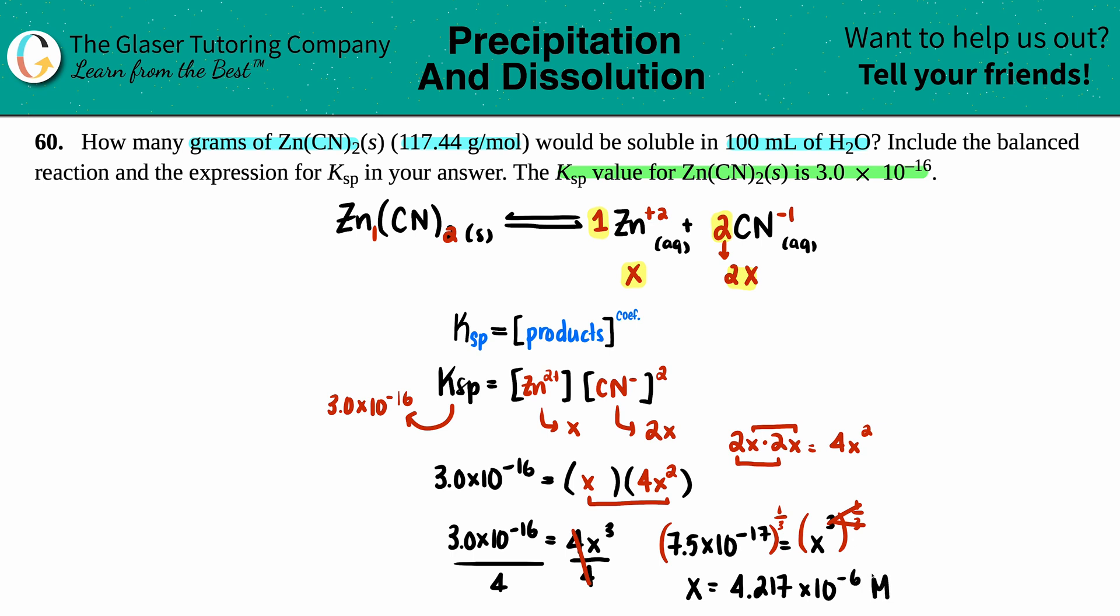The question asks for grams of Zn(CN)2. In the equation there was only one of these, and my answer equals 1x, so the ratio is the same. This molarity would be the Zn(CN)2 molarity.